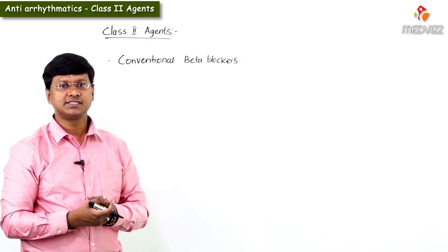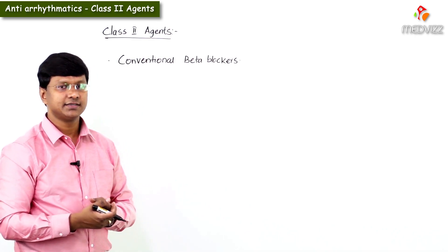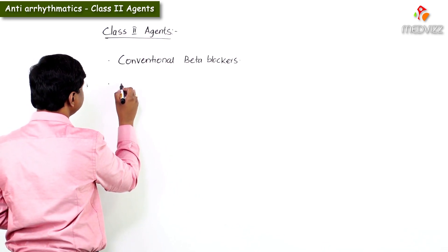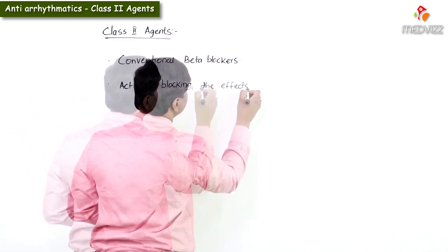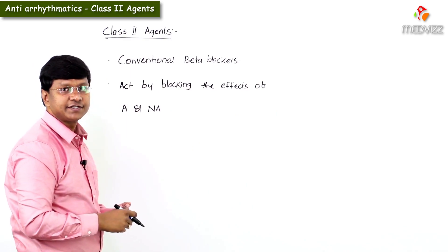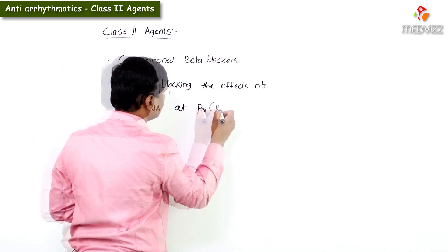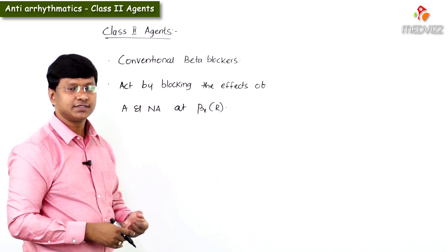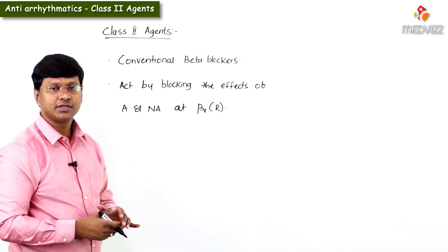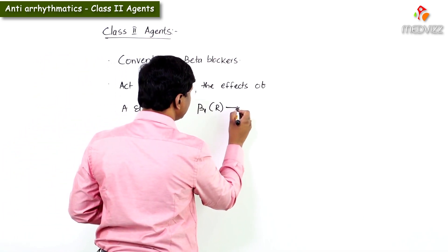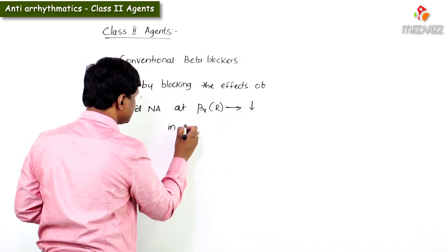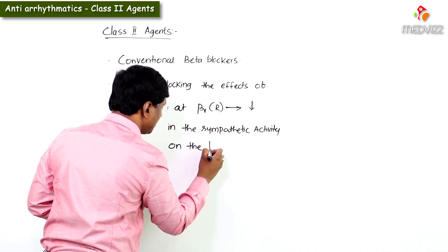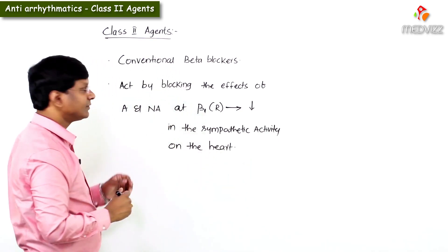Once the beta-1 receptors are being blocked, there is a decrease in the sympathetic activity on the heart.